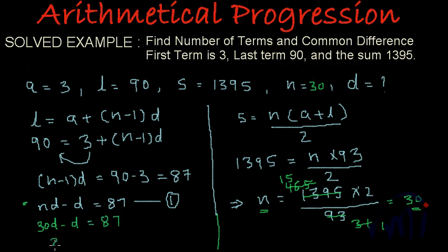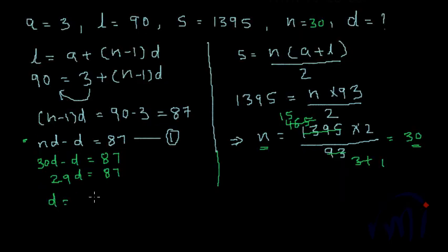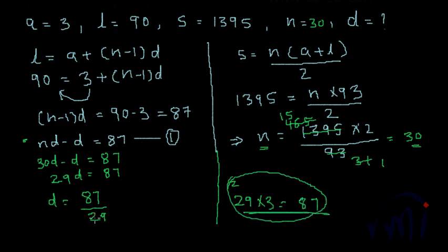30d minus d will be 29d is equal to 87, and from here we will get d is equal to 87 by 29. And I think 29 multiplied by 3 will give us 87. 9 times 3 is 27, 2 carried forward, 3 times 2 is 6 plus 2 is 8. So 29 times 1 is 29 and 29 times 3 is 87. So from here we get d is equal to 3.